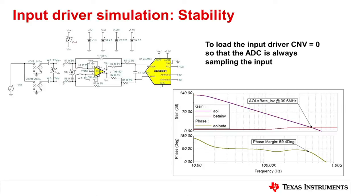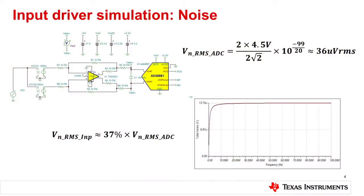We get a very good frequency response, all in check. Moving on to the next section — the noise performance. We address the noise performance of the input driver by simulating and getting the RMS value, which works out to be 36 microvolts RMS. That's about 37% of the voltage RMS noise of the ADC.